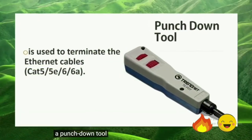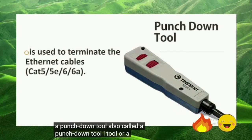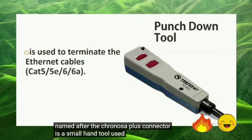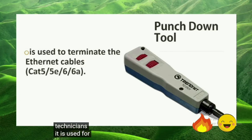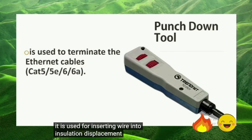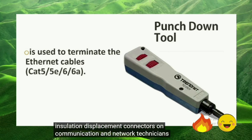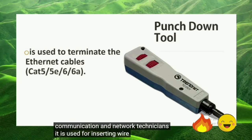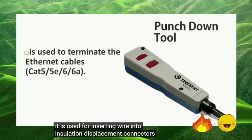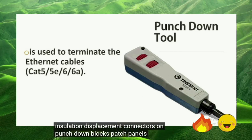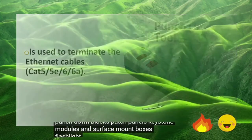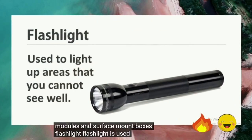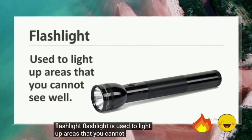A punch down tool, also called an eye tool or krone tool named after the Krone surplus connector, is a small hand tool used by telecommunication and network technicians. It is used for inserting wire into insulation displacement connectors on punch down blocks, patch panels, keystone modules, and surface mount boxes. A flashlight is used to light up areas that you cannot see well.